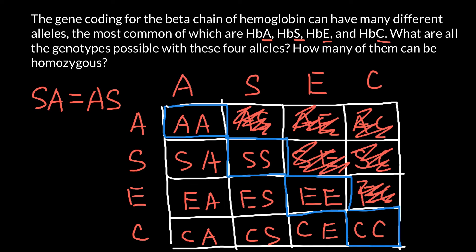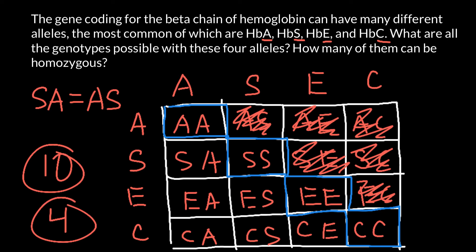So the unique genotypes we have are: 1, 2, 3, 4, 5, 6, 7, 8, 9, 10. That is the answer for how many unique genotypes we have — ten. And we have 1, 2, 3, 4 genotypes that are homozygous. So two answers for two questions.